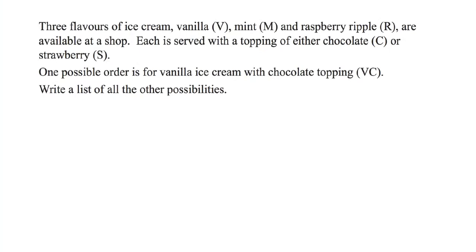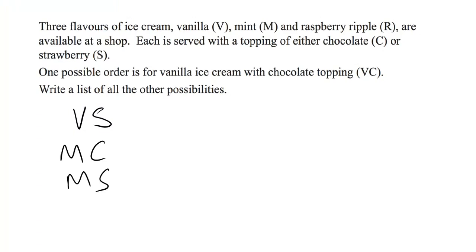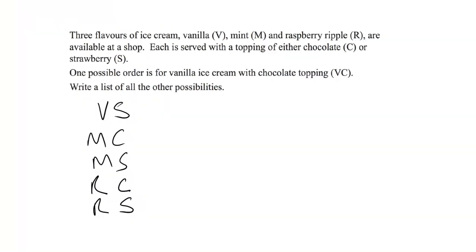For the next example, three flavors of ice cream — vanilla, mint, and raspberry ripple — are available at the shop. Each is served with a topping of either chocolate or strawberry. One possible order is vanilla ice cream with chocolate topping; write a list of all the other possibilities. Starting with vanilla and strawberry, then mint and chocolate, mint and strawberry, raspberry ripple and chocolate, raspberry ripple and strawberry. So there are five other possibilities.